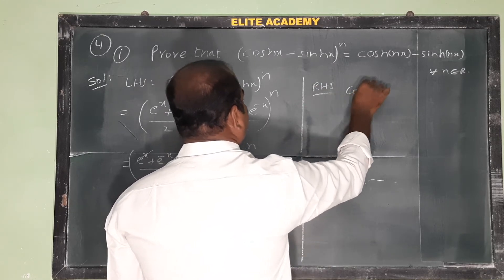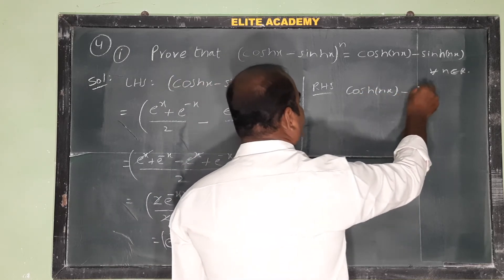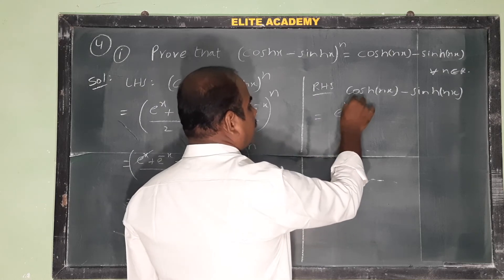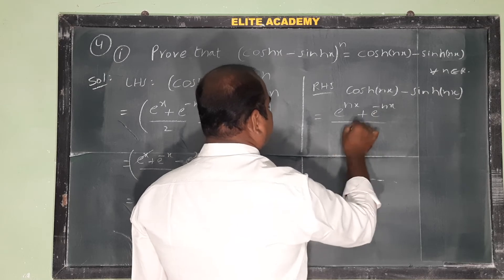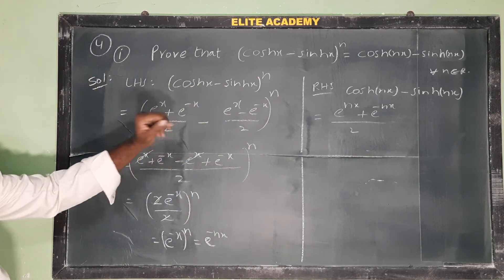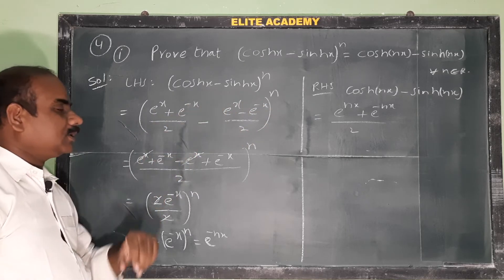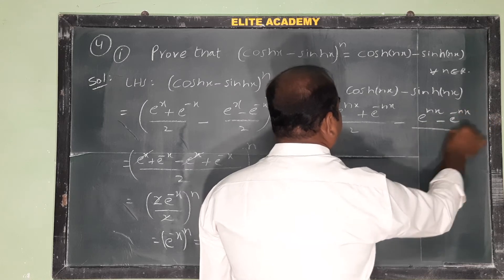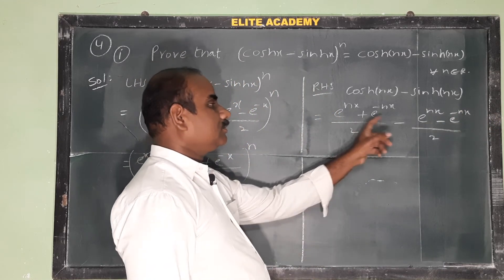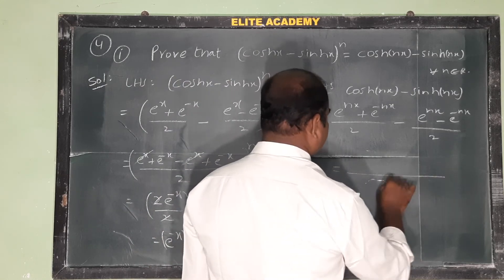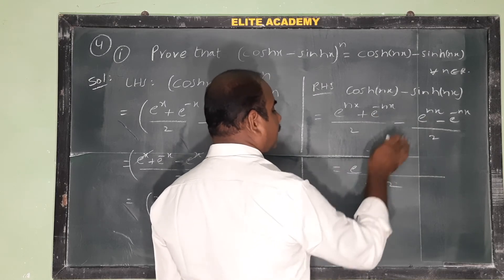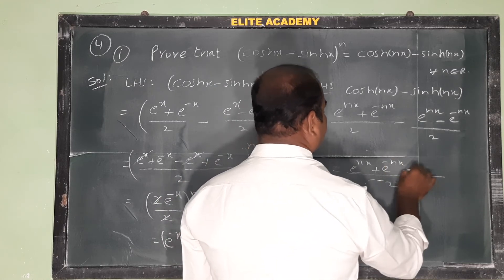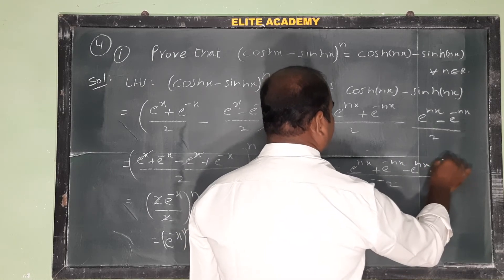Now take RHS: cosh(nx) minus sinh(nx). cosh(nx) means (e^(nx) + e^(-nx)) / 2, and sinh(nx) means (e^(nx) - e^(-nx)) / 2. Both have the same denominator so take LCM. We get e^(nx) + e^(-nx) minus e^(nx) minus into minus plus e^(-nx).